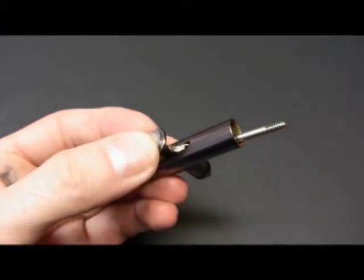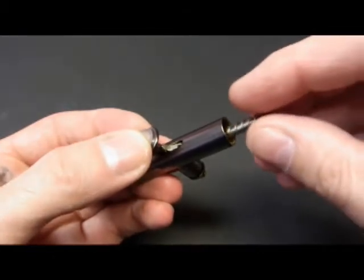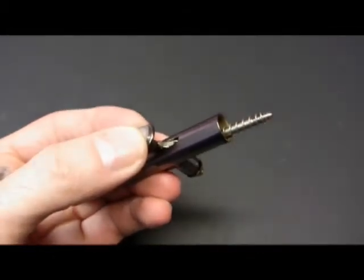Now we're going to insert the trigger rocker lever. Just make sure it goes into the slot and up against the back of the trigger. Trigger spring.